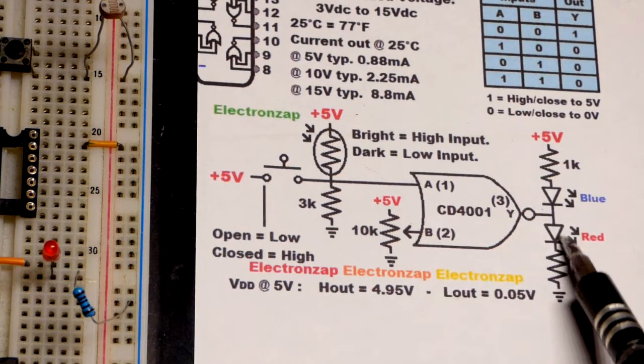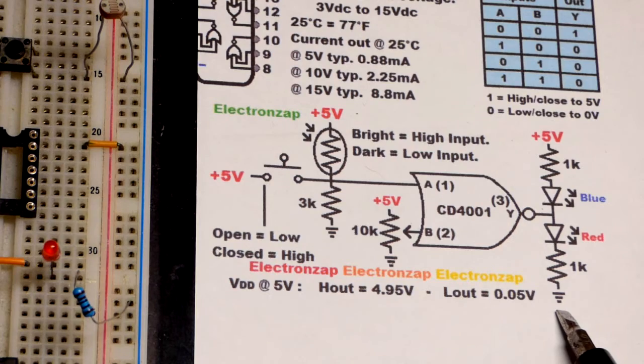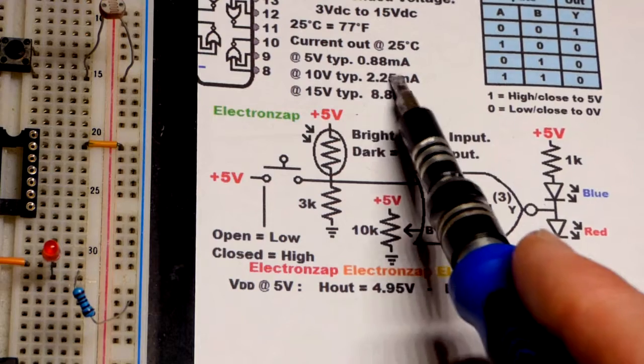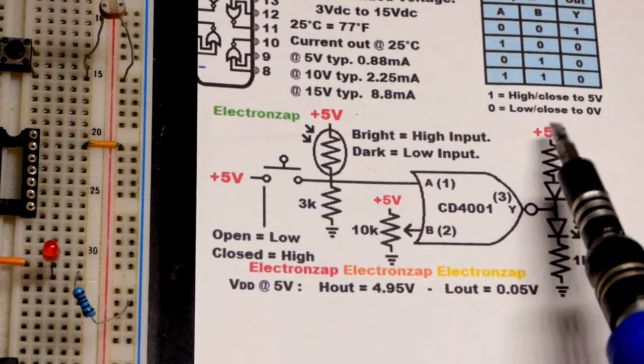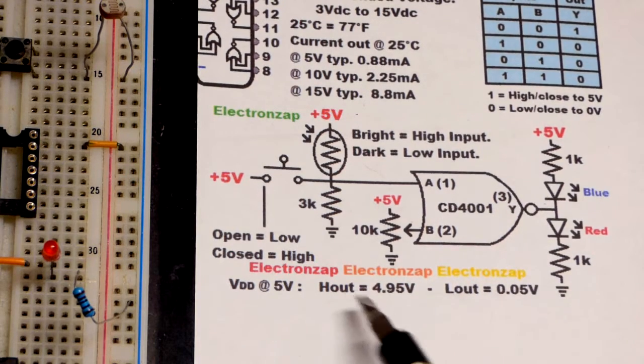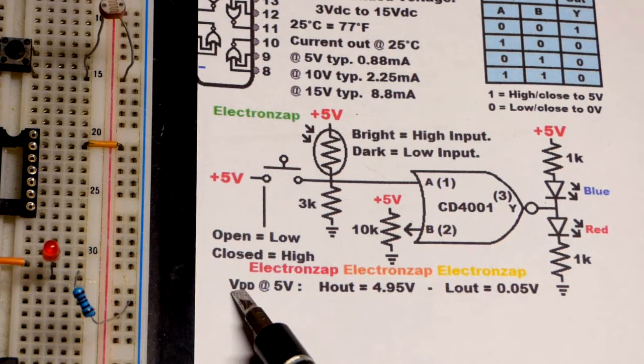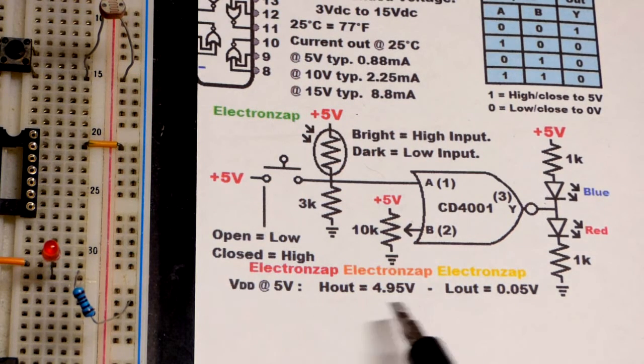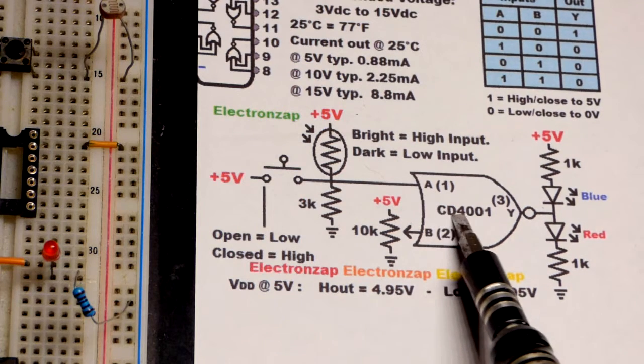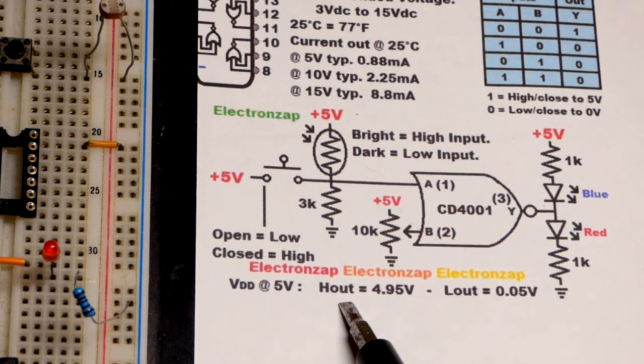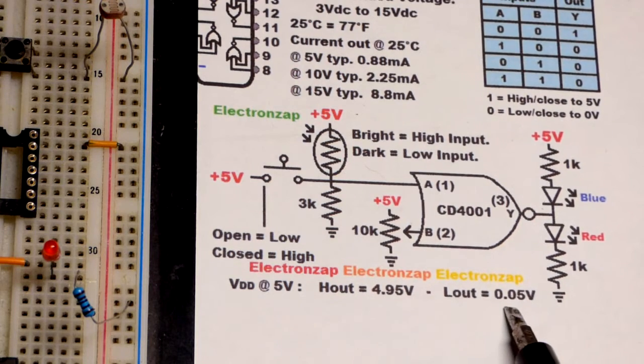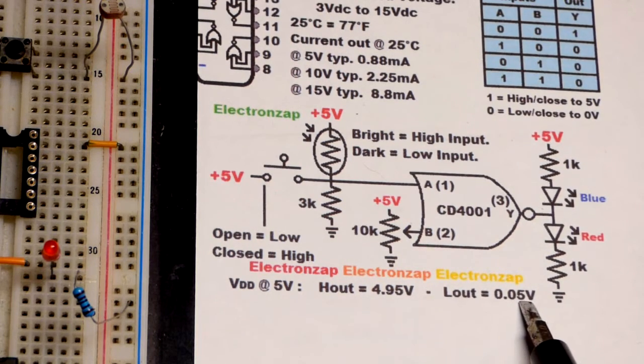With this particular IC, if you're not providing current to a load, you're going to get pretty much the full five volts or zero volts. According to the datasheet, VDD - the positive supply - for this CD4001 has a high output of 4.95 volts and a low output of 0.05 volts.